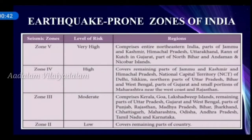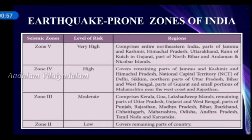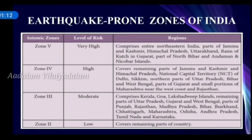See the tabular column children. Zone 5, very high risk, comprises the entire northeastern areas of India, parts of Jammu and Kashmir, Himachal Pradesh, Uttarakhand, Rann of Kutch in Gujarat, part of North Bihar and Andaman and Nicobar Islands. Zone 4, high risk, covers remaining parts of Jammu and Kashmir and Himachal Pradesh, Delhi, Sikkim, northern parts of Uttar Pradesh, Bihar, West Bengal, and parts of Punjab and Rajasthan.